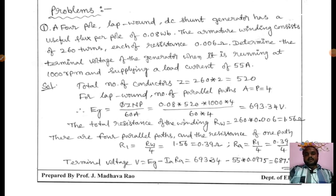Here the problem is: a 4-pole lap wound DC shunt generator has a useful flux per pole of 0.08 webers. The armature winding consists of 260 turns, each of resistance 0.006 ohms. Determine the terminal voltage of the generator when it is running at 1000 rpm and supplying a load current of 55 amperes.